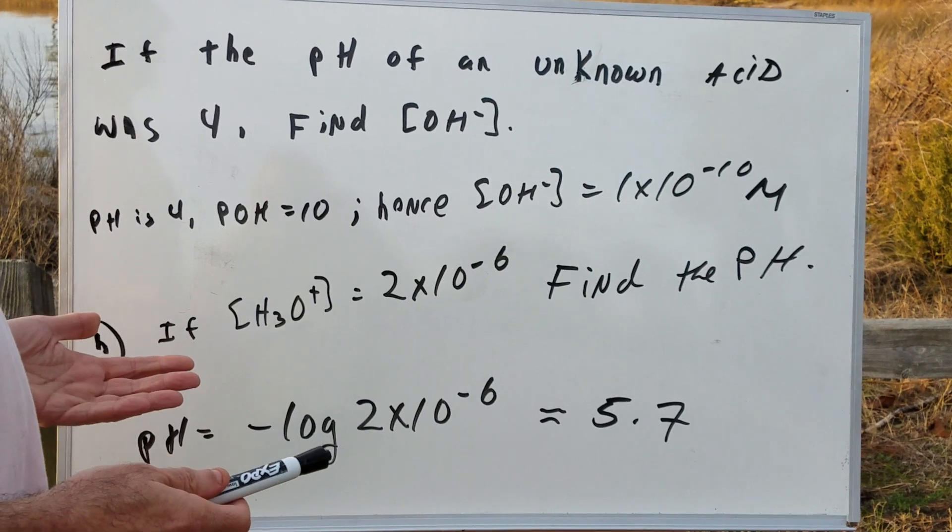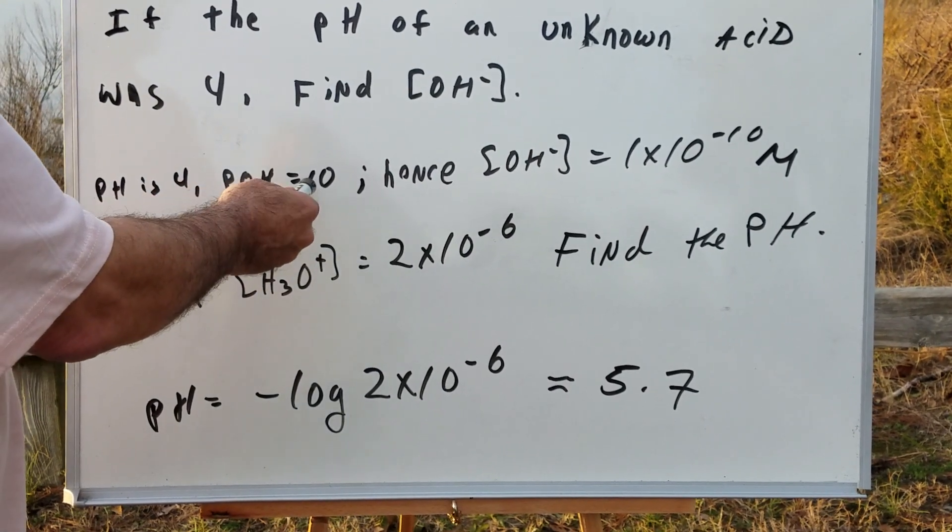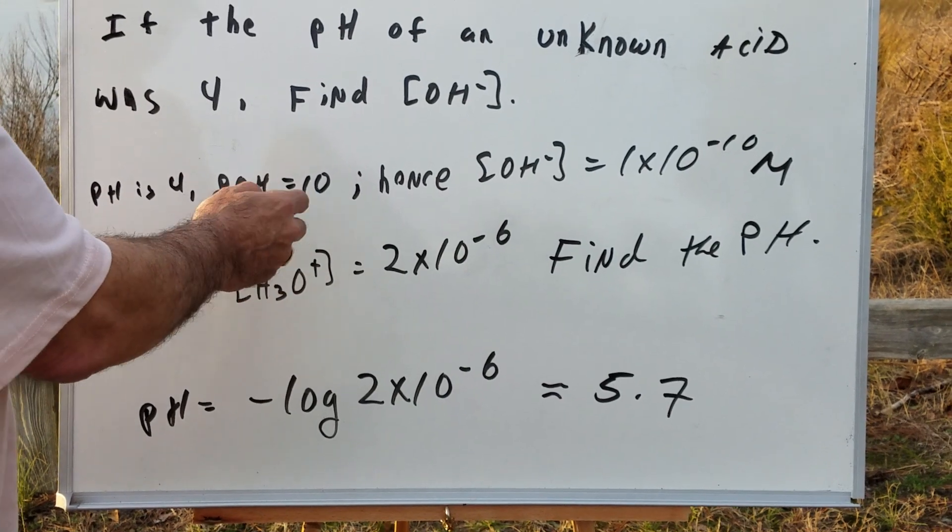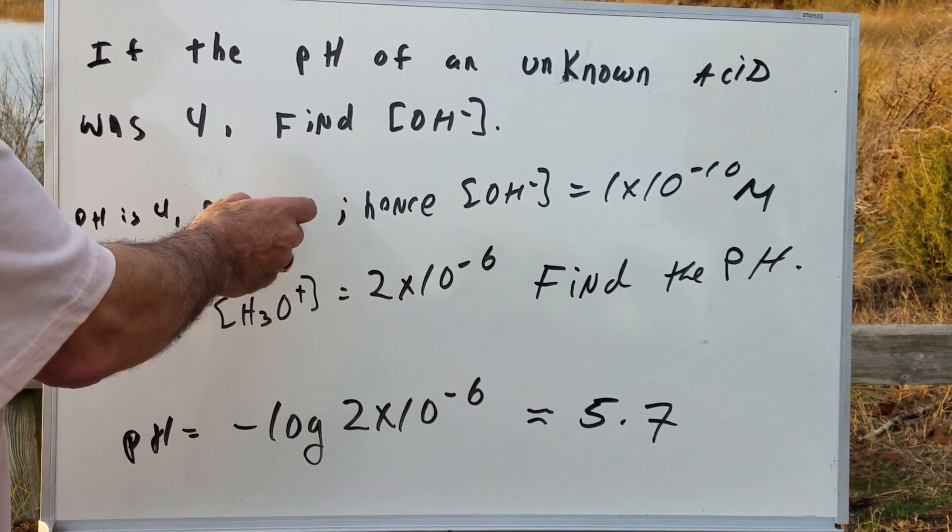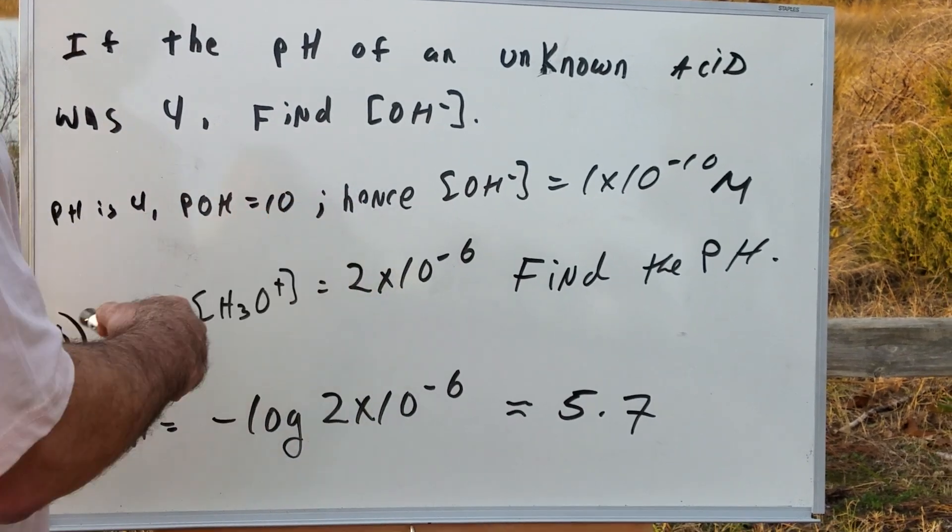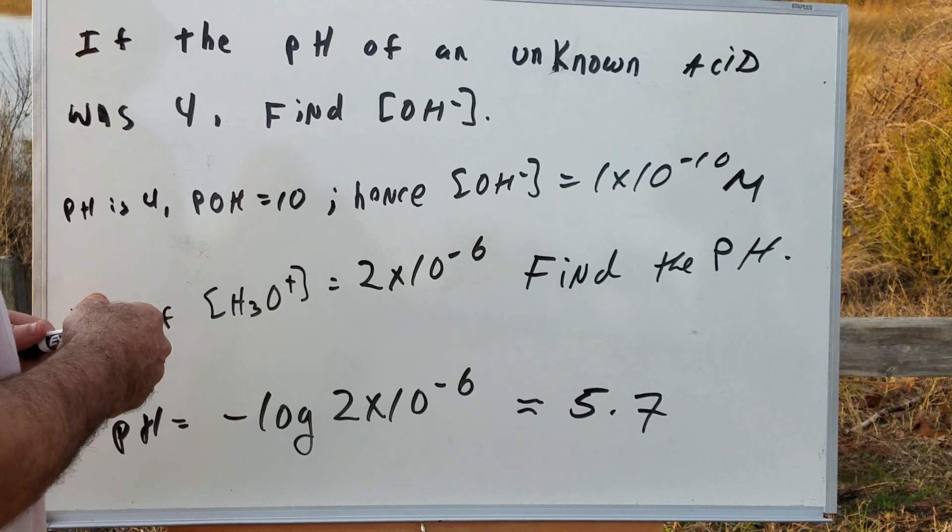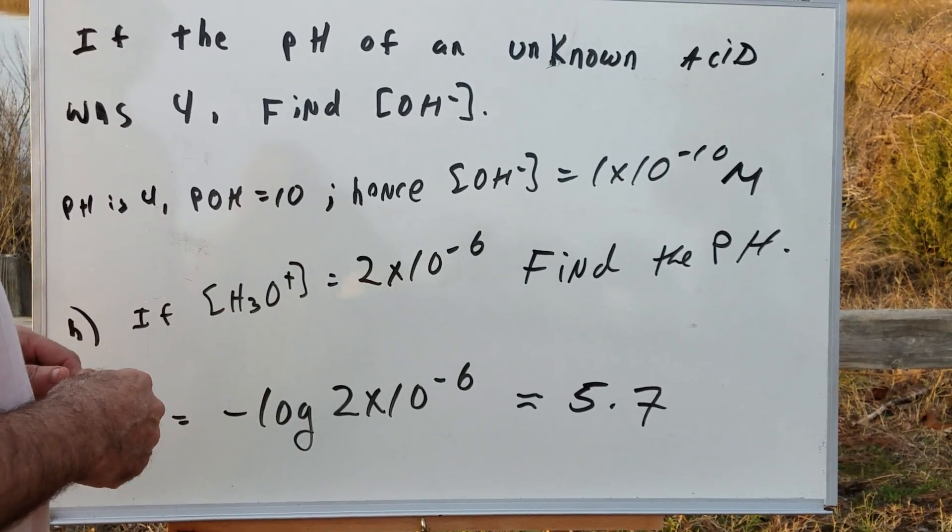Well, we should know the pH plus the pOH equals 14. So if the pH is 4, the pOH would be 10. And then all we would simply do is take this 10 and raise it to the power of 10. So the OH minus would be 1 times 10 to the minus 10th. That's a standard question, and that's pretty straightforward.